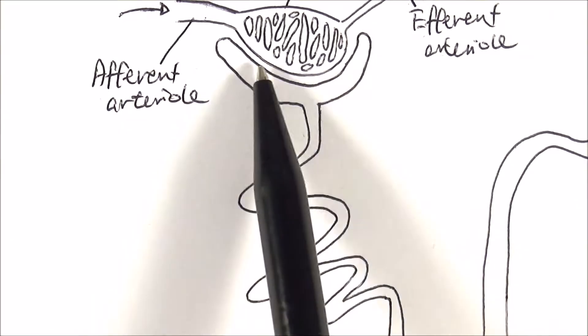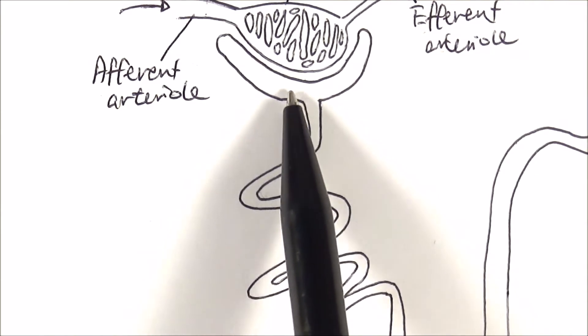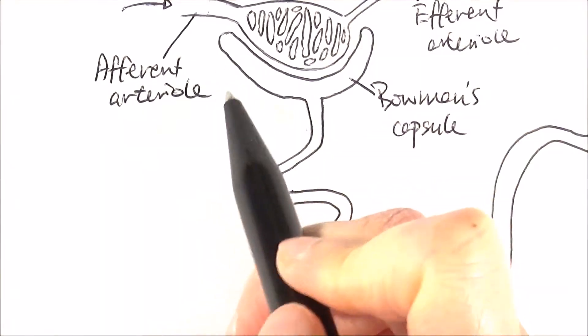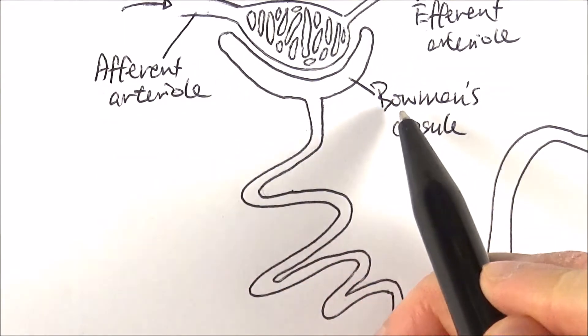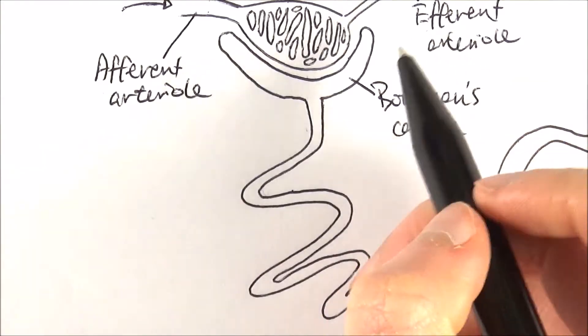So after ultrafiltration, the liquid inside the nephron is what we call filtrate, and then it goes into this Bowman's capsule. So it has a C-shaped structure, so think of a bow like an arrow and bow and cap, just want me to think about it.